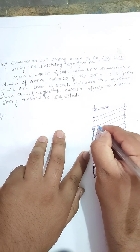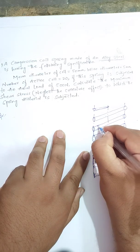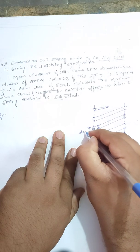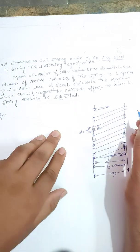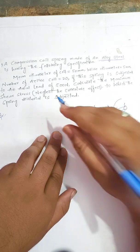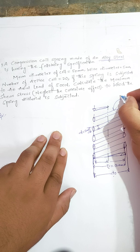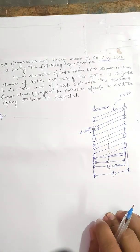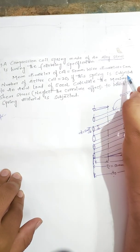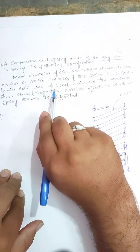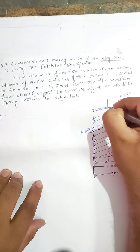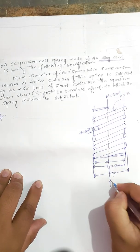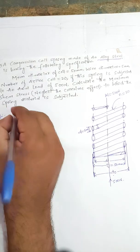The wire diameter — the diameter of the wire — is represented by small d, equal to 5 mm. The number of active coils is 20, so n equals 20. The spring is subjected to an axial load in the form of compression W, which is 500 Newton.